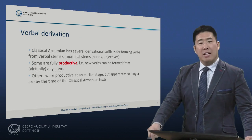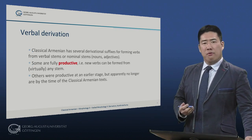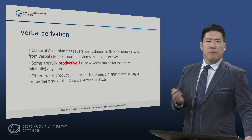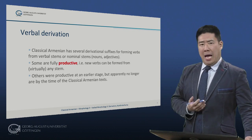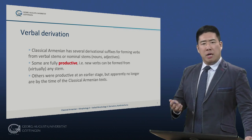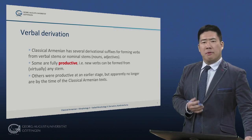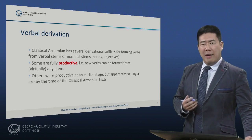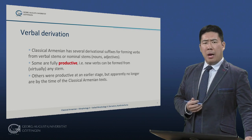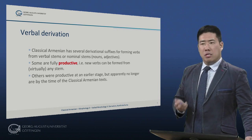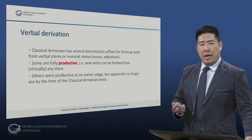Classical Armenian has several derivational suffixes for forming verbs, either from verbal stems or from nominal stems, meaning nouns or adjectives. Some are fully productive — that means that new verbs can be formed from virtually any stem. Others were productive at an earlier stage, but apparently no longer are by the time of classical Armenian in the golden age of the fifth and sixth centuries AD.